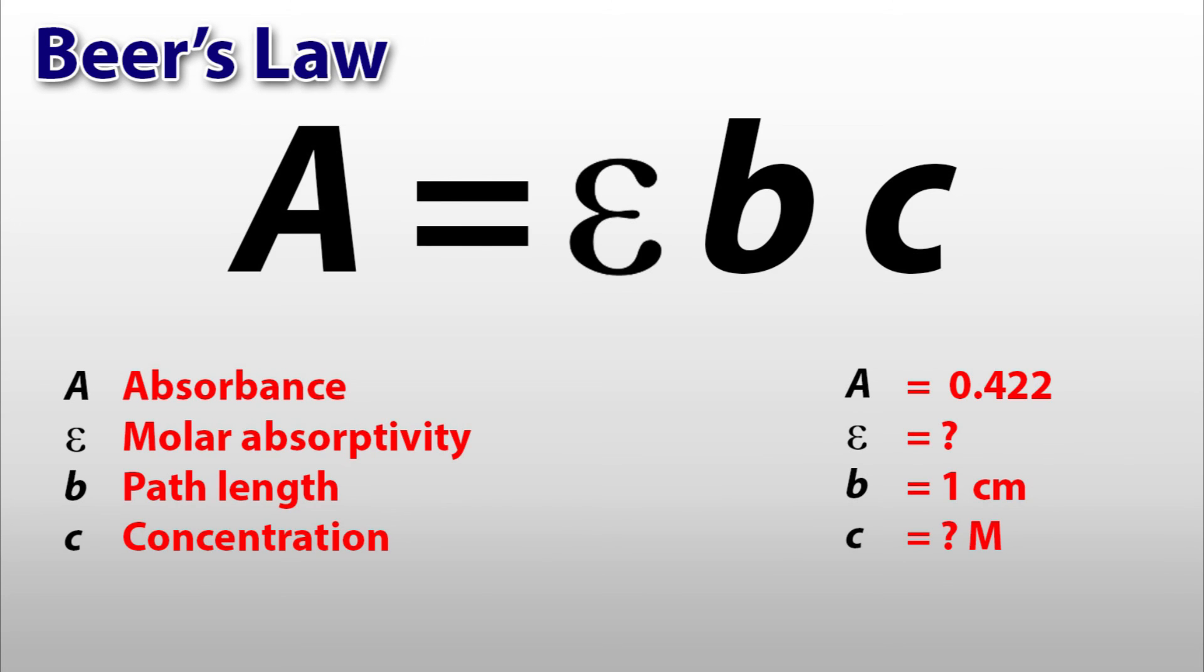All we need now is epsilon. This is a constant known as the molar absorptivity constant, which is specific to our substance. We can find this number in our linear equation from our calibration curve.